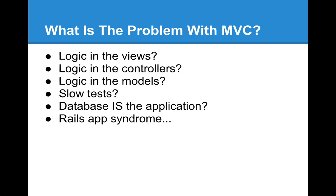Things like Rails MVC tend to lead you down all of these paths that are bad, but they lead you there by being really convenient and making it really fast to build things, even if you're going to just have to fix them later. It's like building a house out of cardboard. You can put up a lot of house with a lot of cheap cardboard really fast. But if a windstorm hits, you're going to wish you had used wood or steel.